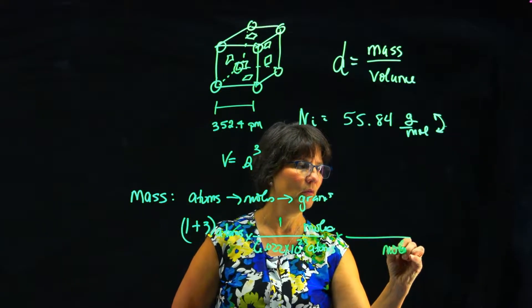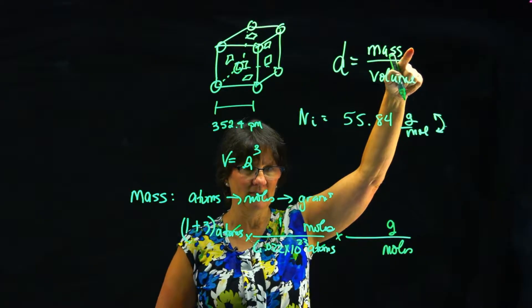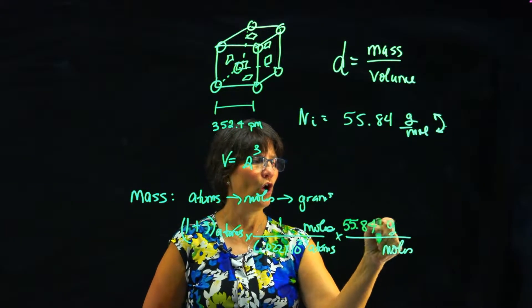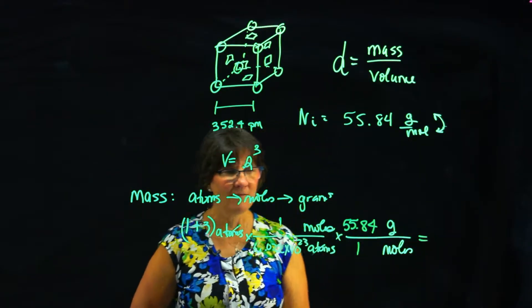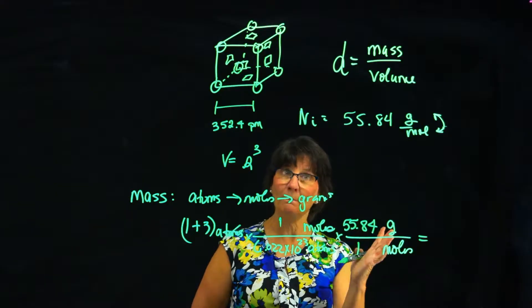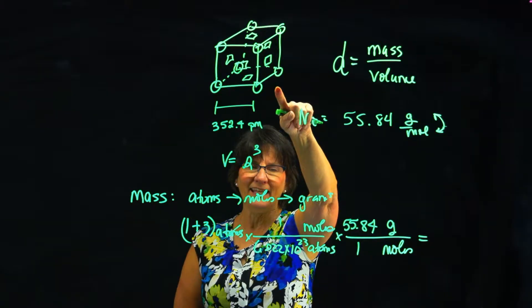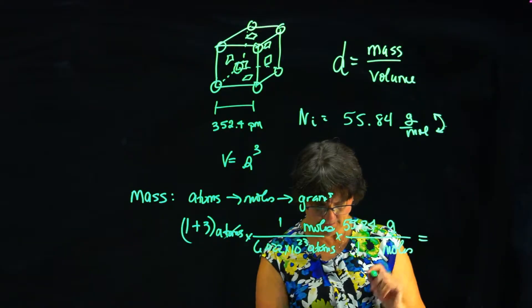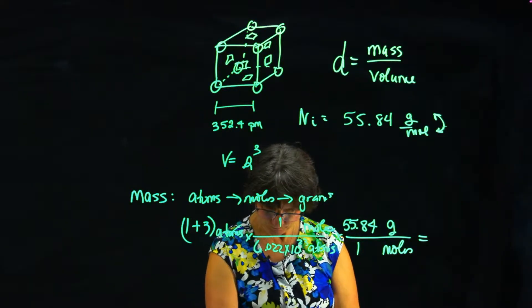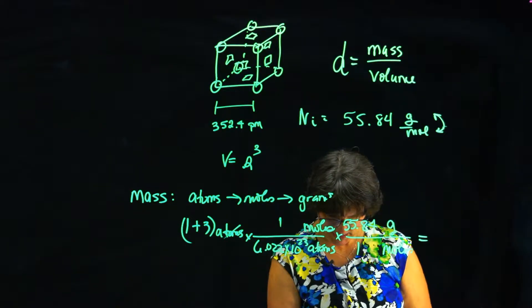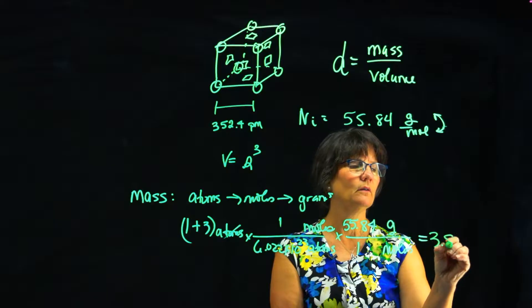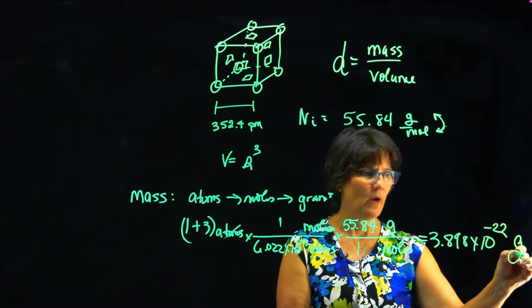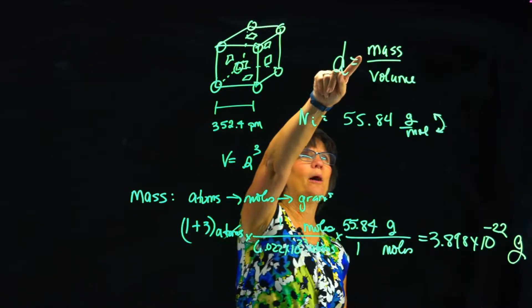So 6.022 times 10 to the 23 atoms is one mole. So now I've gone from atoms to moles. And then I don't want moles. What I really need is grams because density is mass over volume. So I use this piece of information, 55.84 grams in a mole. And now I know how massive that unit cell is. This little tiny unit cell that's made up of four atoms is not going to have a big mass. It's going to have a tiny mass. And its value is 3.898 times 10 to the minus 22 grams.